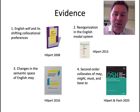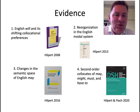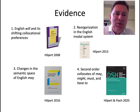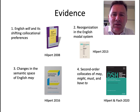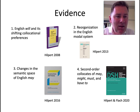In the third part, I will discuss how the lexical collocates of English may can be modeled as a semantic space and how we can detect changes in that semantic space. Part four discusses recent work done together with Susanne Flach, using second-order collocates for the purpose of contrasting near-synonymous grammatical elements such as may and might, and must and have to.